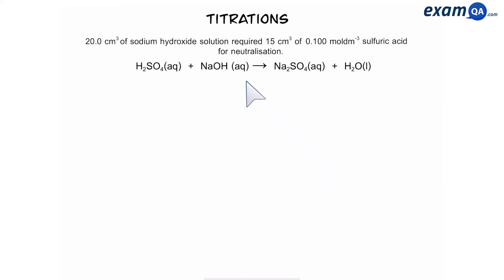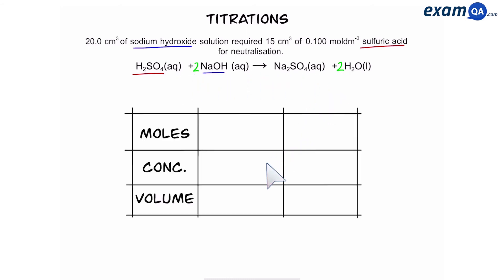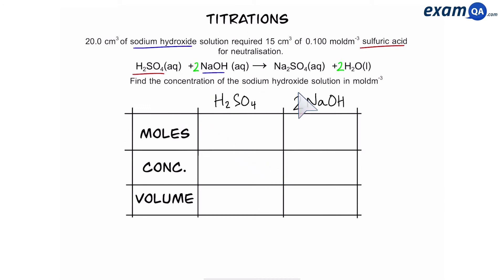Let's try another question. Again, the first step is to work out the two main reactants, and that is sodium hydroxide and sulfuric acid. Make sure that the equation is balanced — here we have to put a two in front of sodium hydroxide and water. Next, we're going to have our table ready. The question says: find the concentration of sodium hydroxide. Sulfuric acid and sodium hydroxide go on the table because they are the two main reactants we identified.